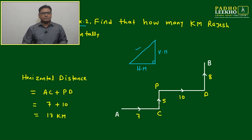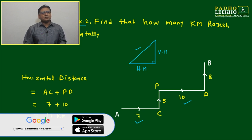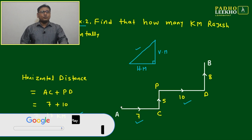Then your question is asking, the diagram is same, find how many km Rajesh travelled horizontally. Horizontal movement will be this and this, means AC plus PD, it will equal to 17 km. Rajesh travelled 17 km horizontally.